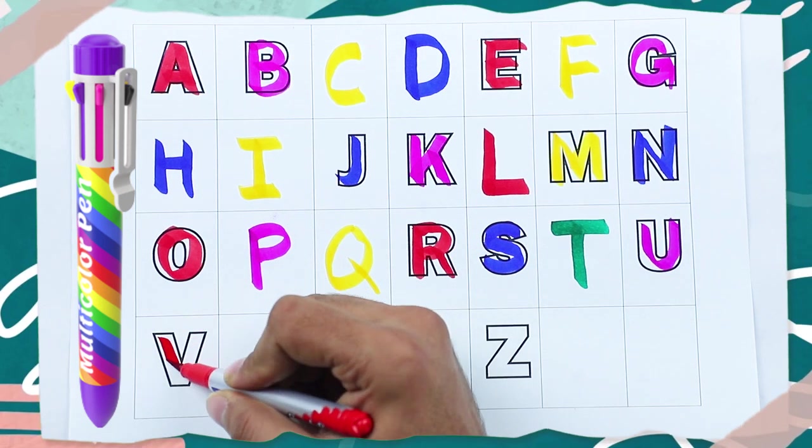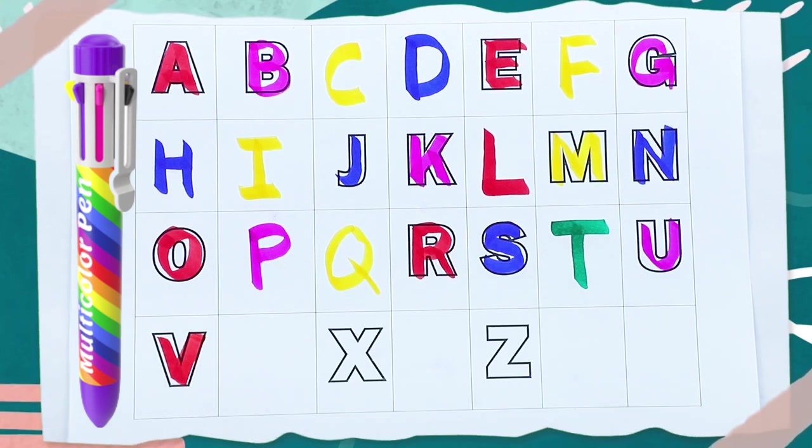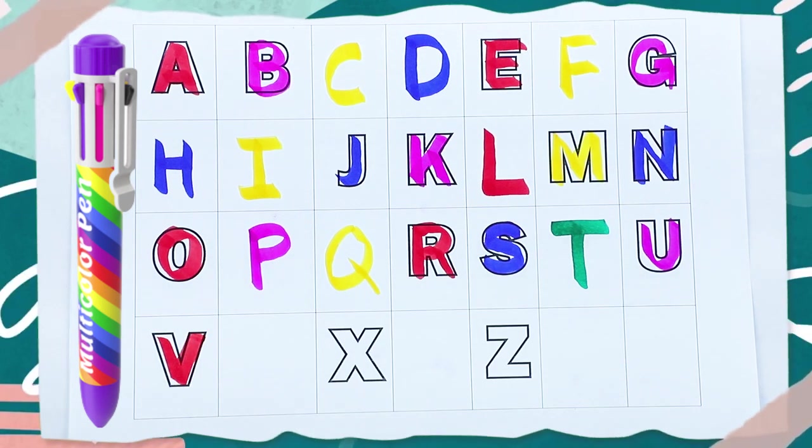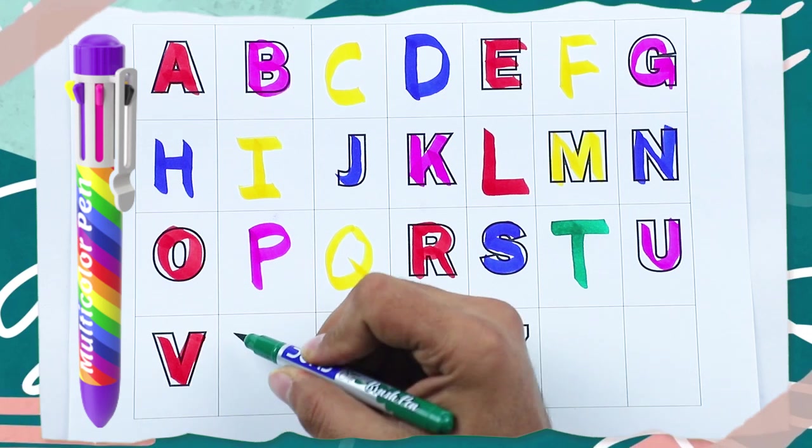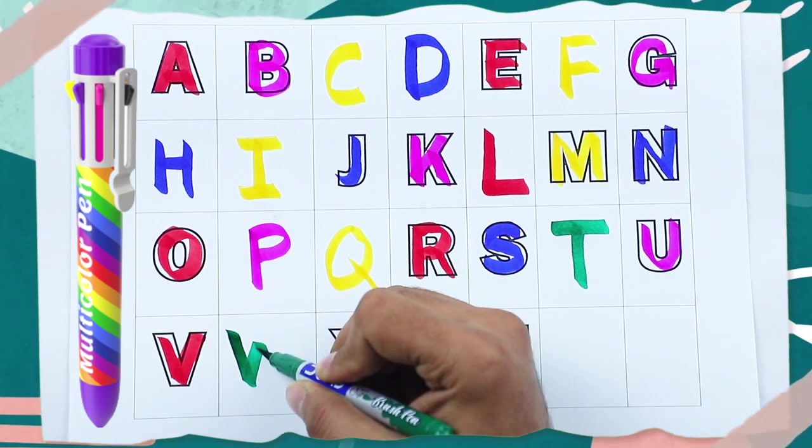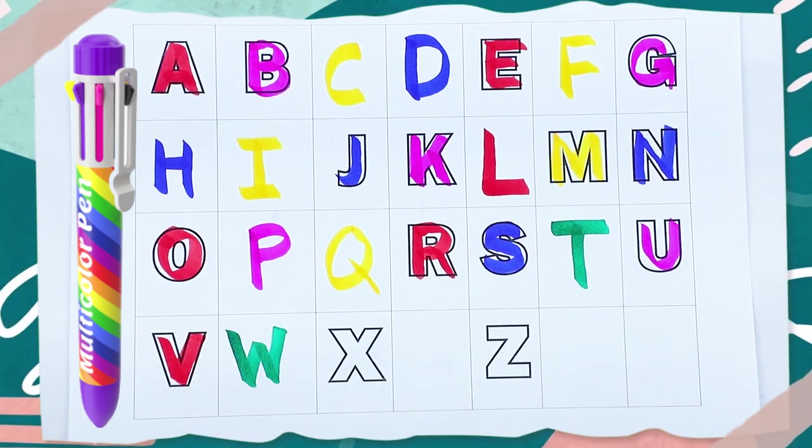Red color, V. V for van. What next? Tell me. Yes, right. It's W. W for watch.